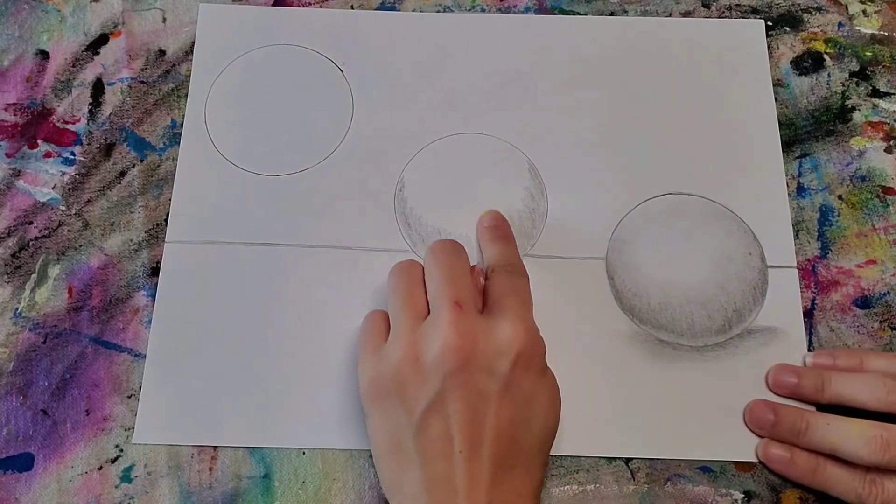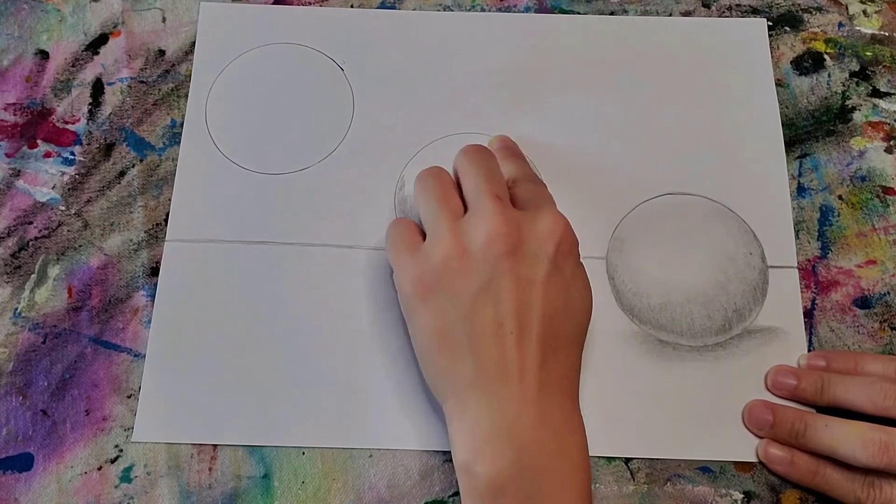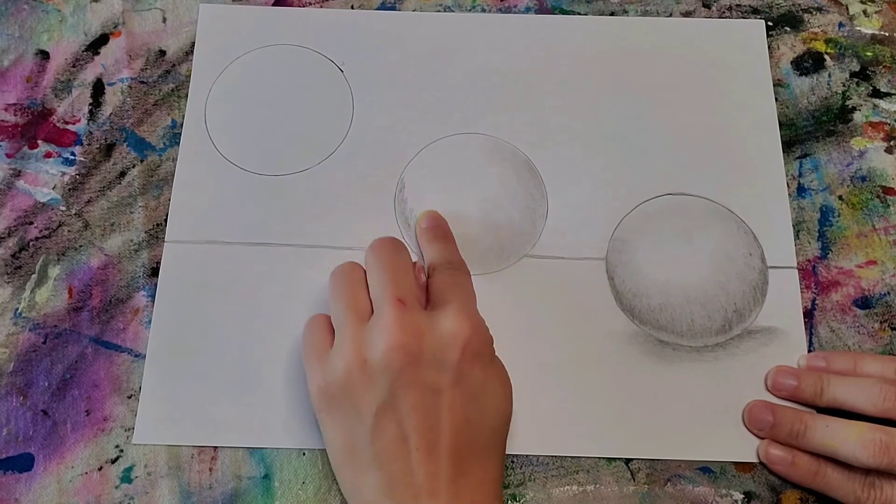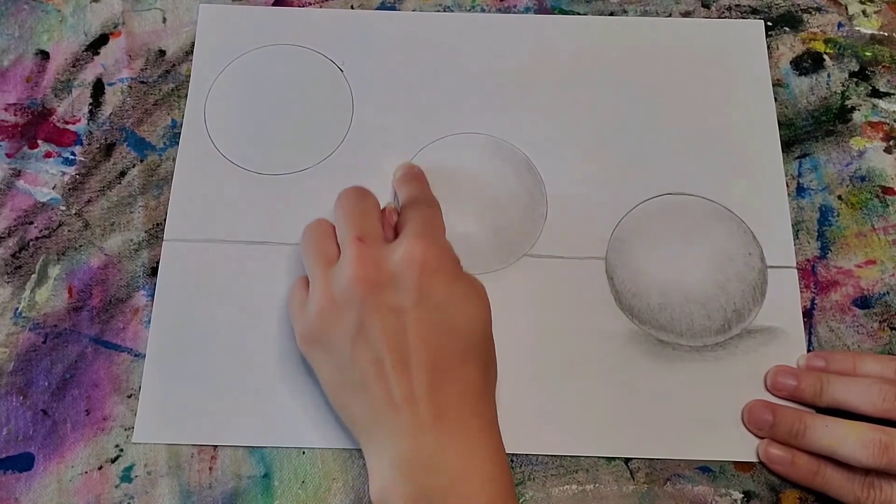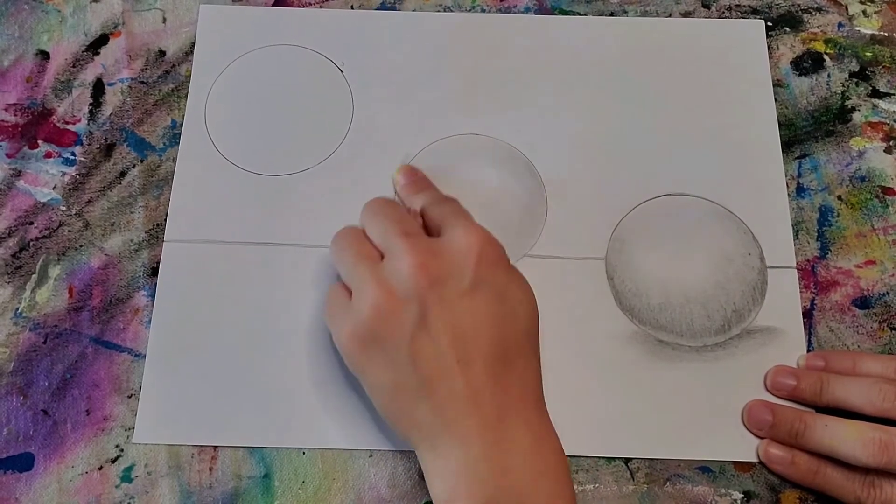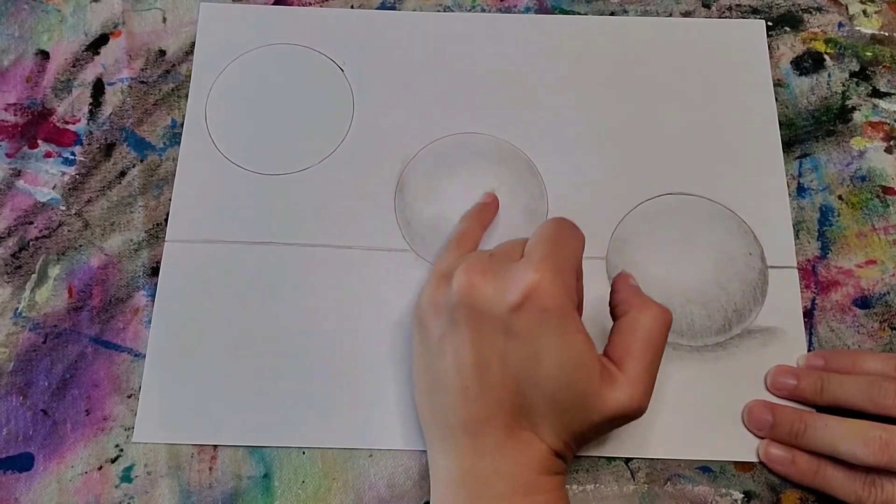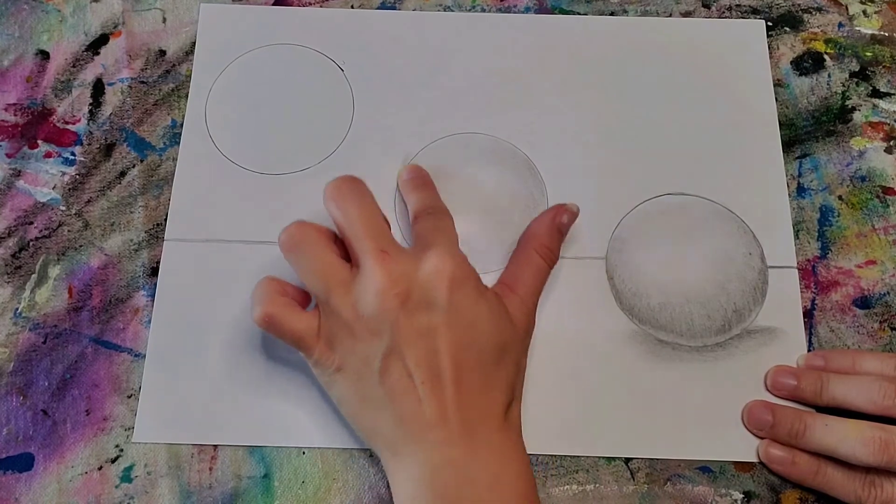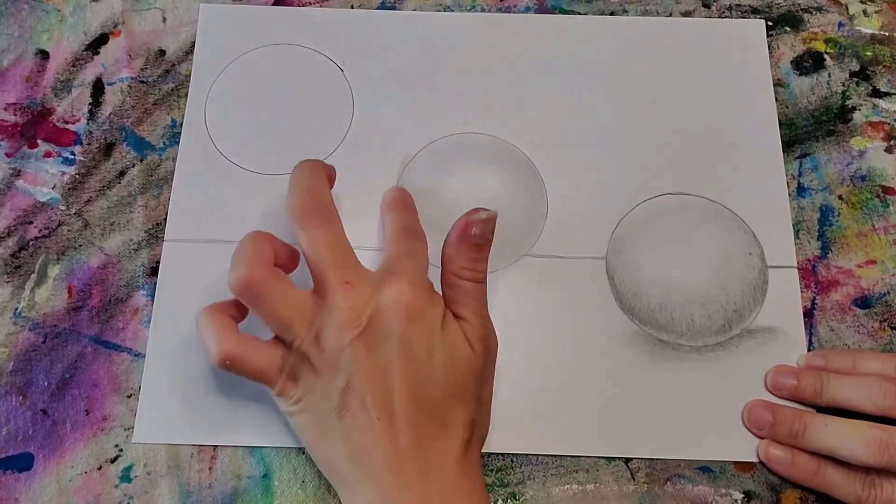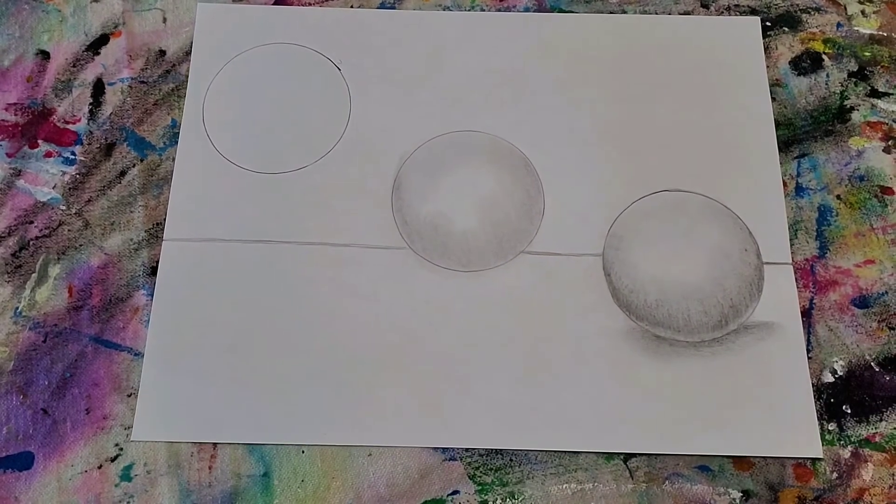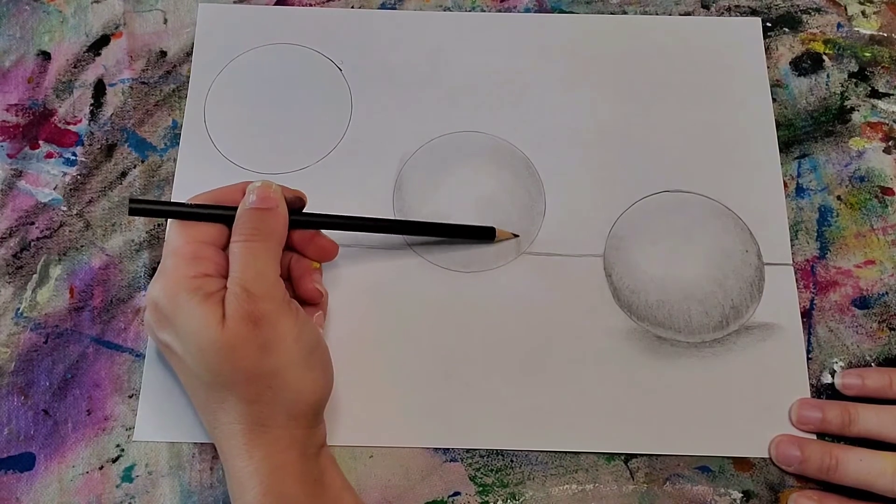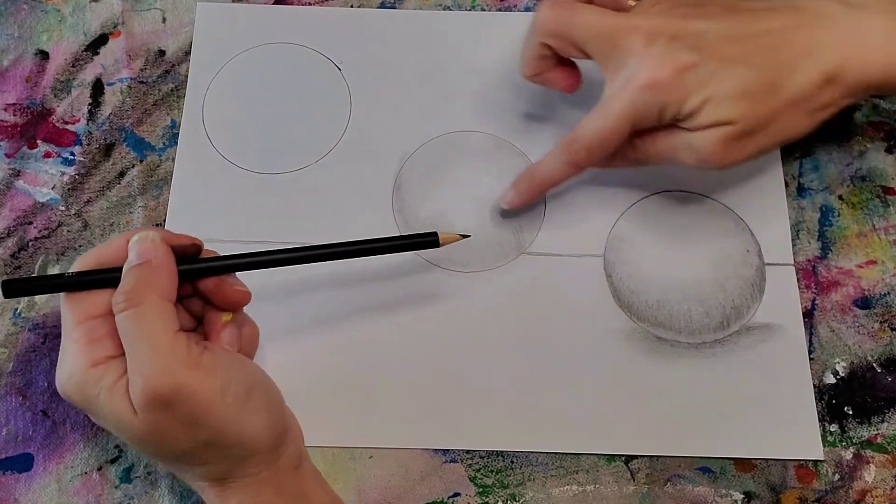Take my finger, smudging that. And then whatever's left on my finger, I'm just going to go around the top, leaving that middle white.